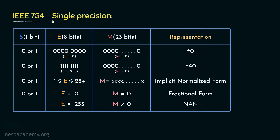In case of single precision, the exponent bias is XS-127. In the previous session, while studying about the bias, I mentioned that in case of biased exponent used in IEEE 754 standards, two patterns of the exponent — all zeros and all ones — are not used to represent any value in the range of exponents. The reason is that the patterns all zeros and all ones are actually used to represent something else.